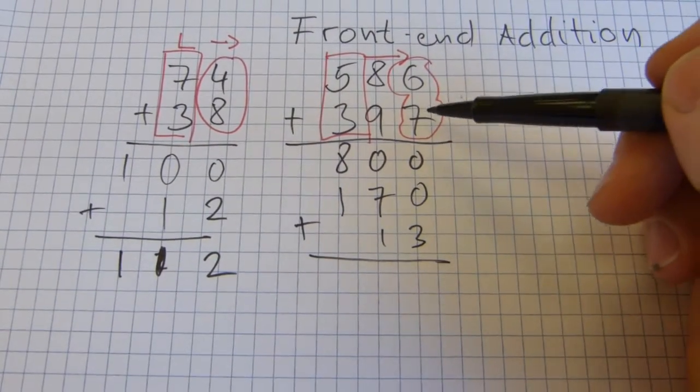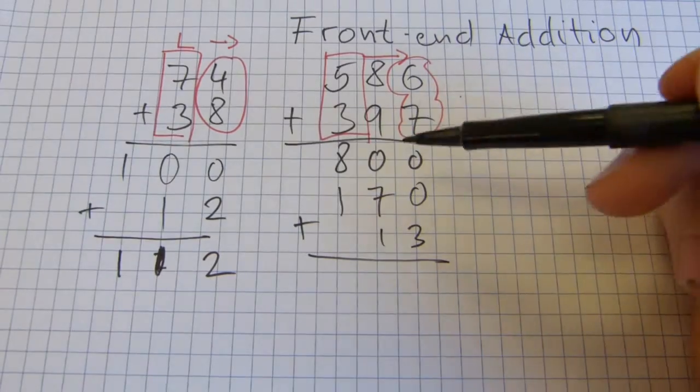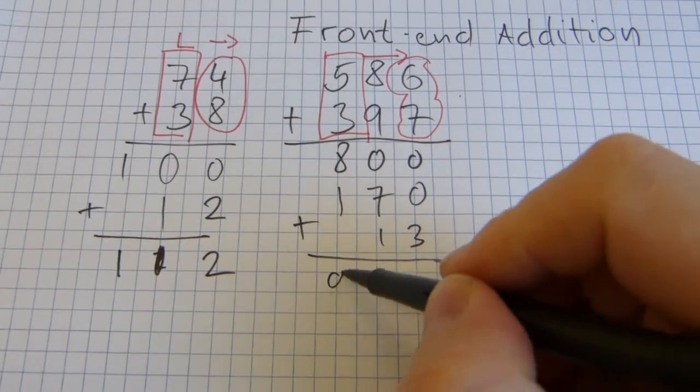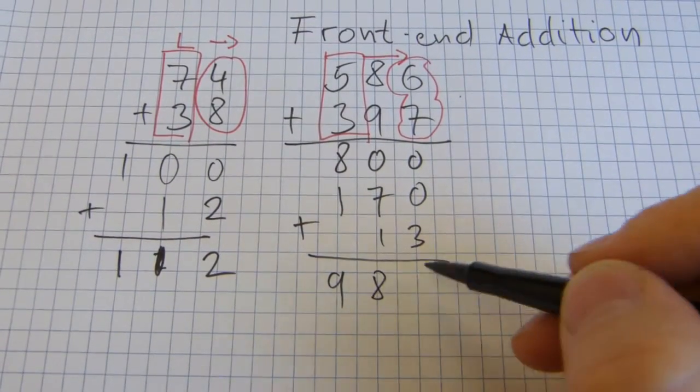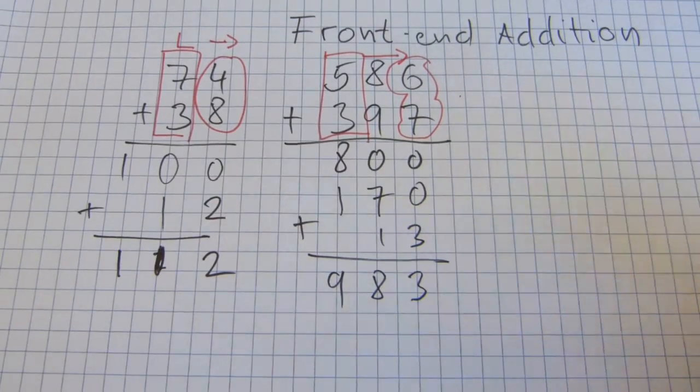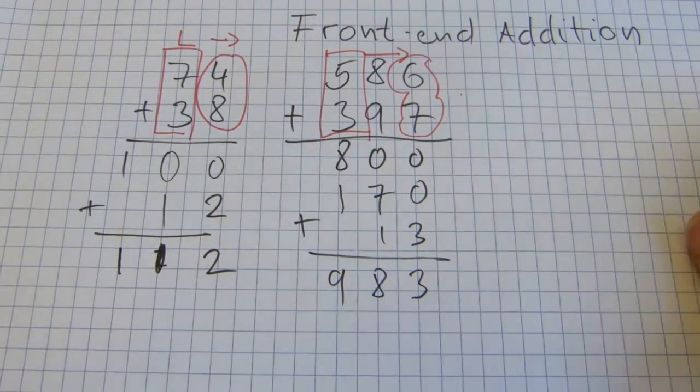So, now the addition with carrying became an addition without carrying. 8 plus 1 is 9. 7 plus 1 is 8. 0 plus 0 plus 3 is 3. Done. So, that's the final answer.